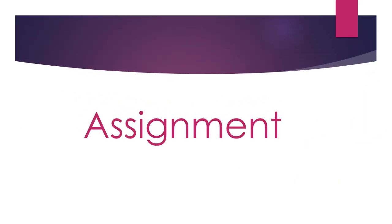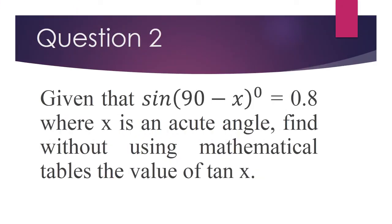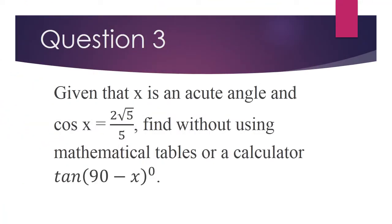We can go to the assignment. Question 1: If cos x is sin(3x + 10), find x. Question 2: Given that sin(90 − x) degrees is 0.8 where x is an acute angle, find without using mathematical tables the value of tan x. Question 3: Given that x is an acute angle and cos x equals 2 root 5 over 5, find without using mathematical tables or a calculator tan(90 − x).